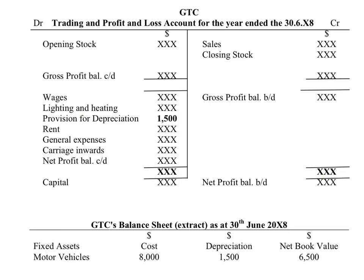That annual depreciation will go into your profit and loss account on the debit side as an expense, and that will reduce your gross profit. In the balance sheet, again using three columns, we would show the historic cost, the total depreciation so far of £1,500, and the net book value of £6,500. £8,000 minus £1,500 leaves a net book value of £6,500.